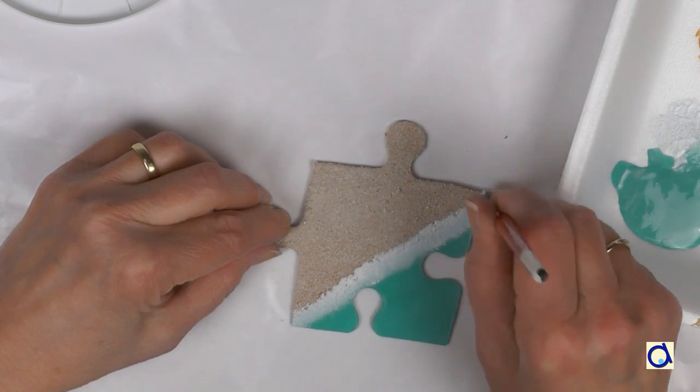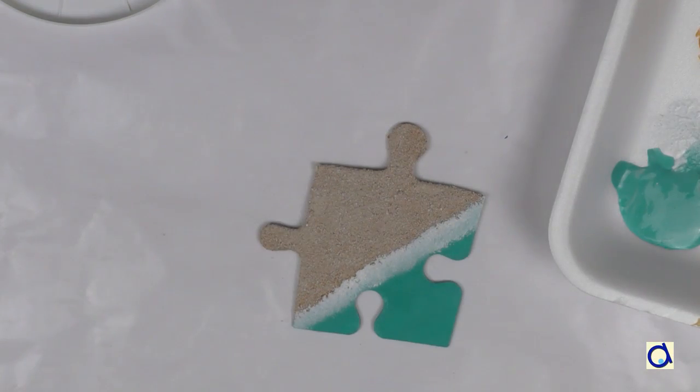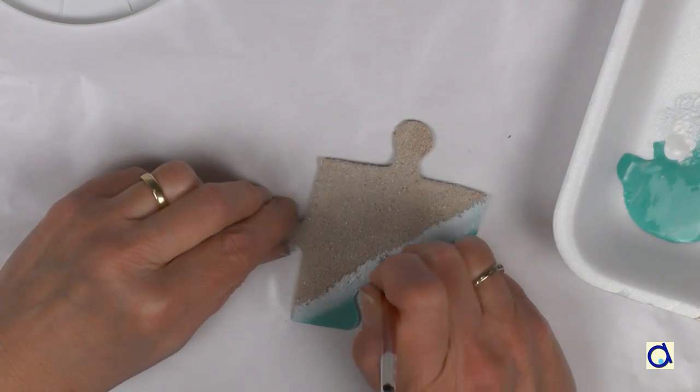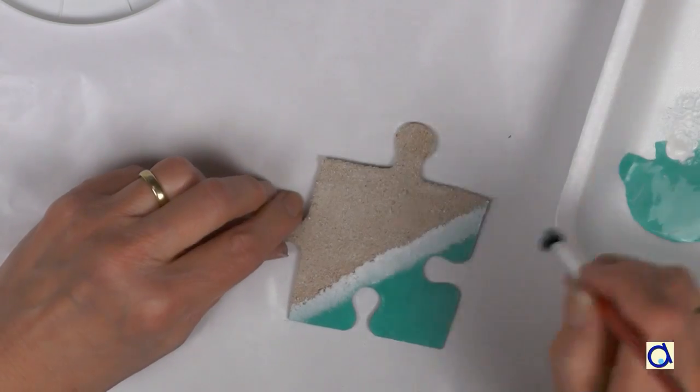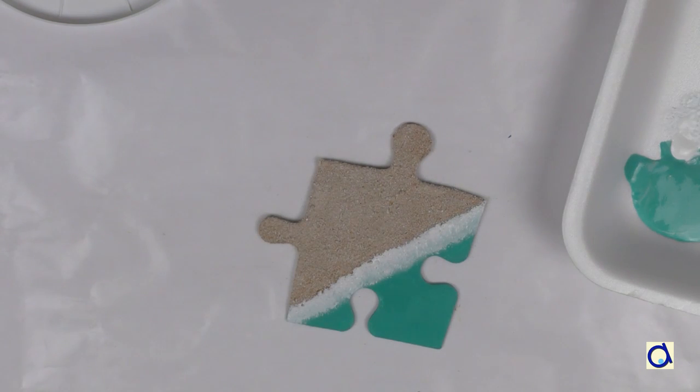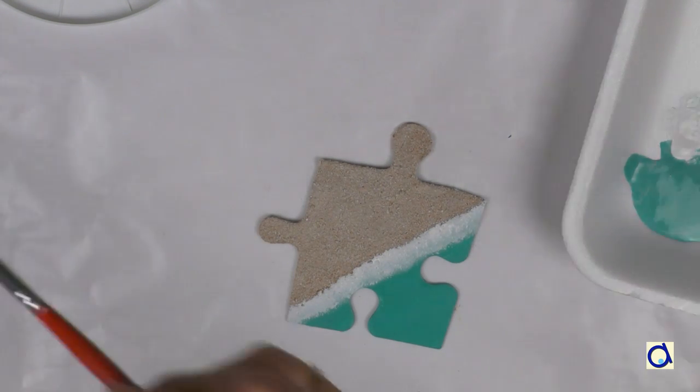Now, tap the brush along the sand line with the long bristles dipped in white paint toward the sand and the short bristles dipped in turquoise paint toward the water. This will create an effect of waves hitting the sand. Let dry completely.